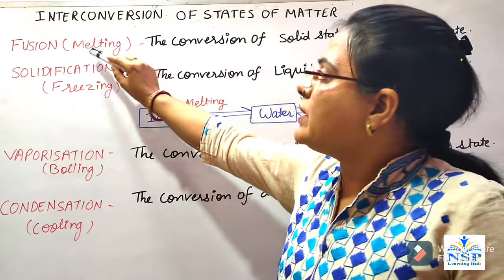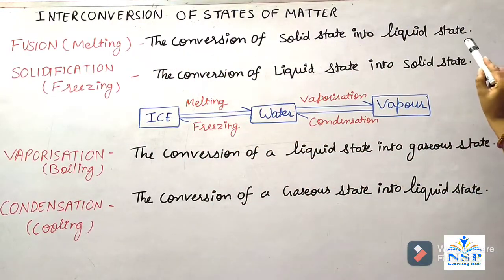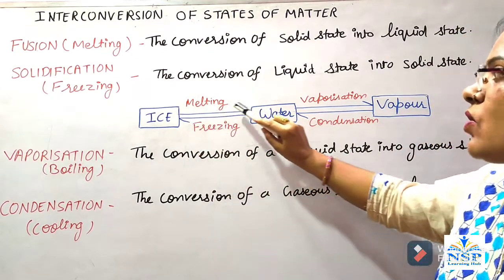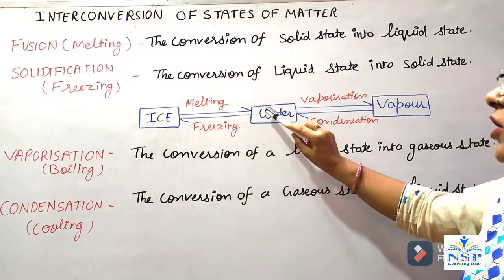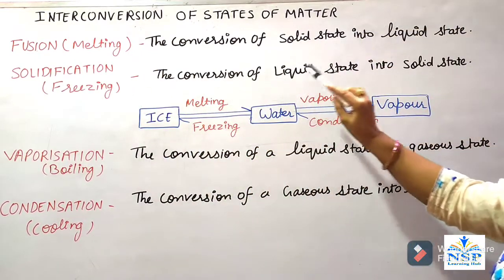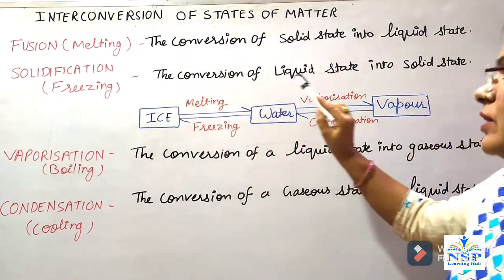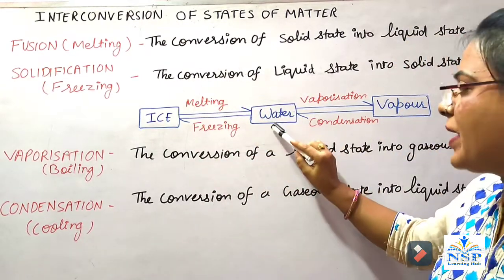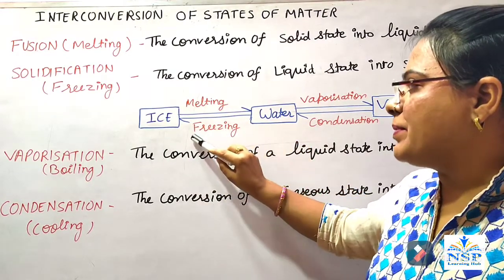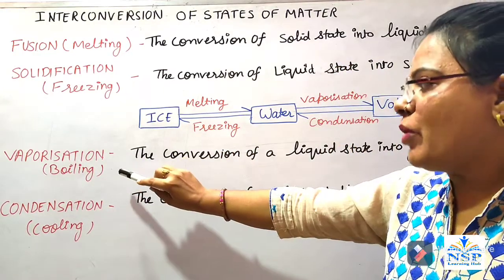Fusion or melting: the conversion of solid state into liquid state is called fusion. When ice changes into water, this process is called melting, because of increasing temperature. Solidification or freezing: the conversion of liquid state into solid state is called solidification or freezing. For example, when water changes into ice by decreasing temperature, this is called solidification.